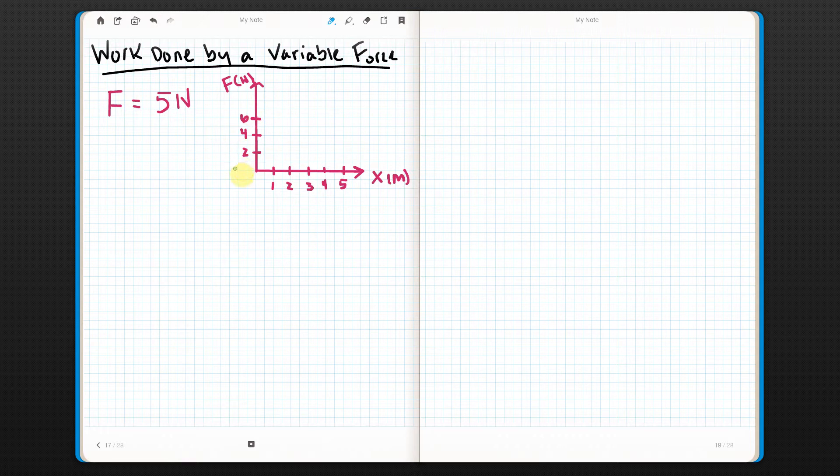Then we can't use what we used to use. We said work was force times distance times the cosine of the angle between them. Remember that? But what if force is not a constant? Then I can't use this.